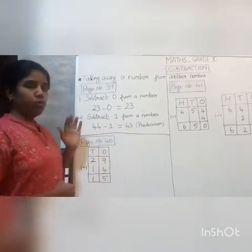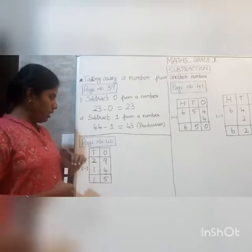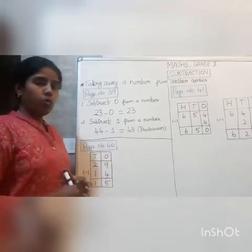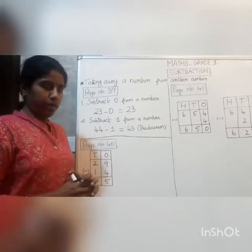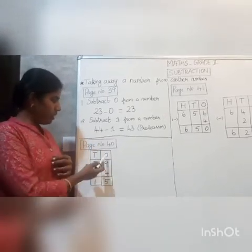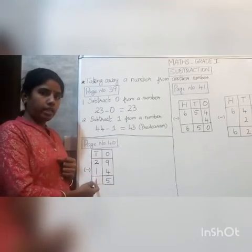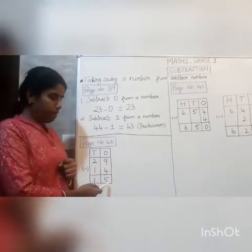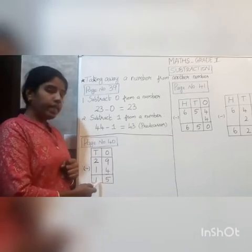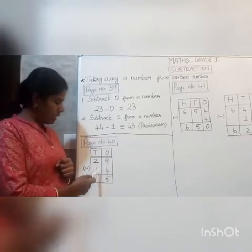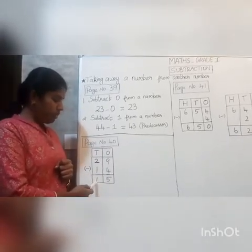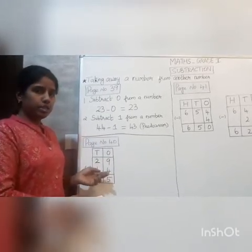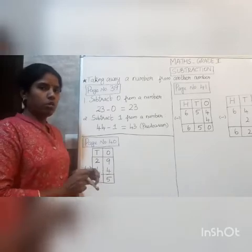Moving on to page number 40, we have two-digit subtraction without borrowing or regrouping. For two-digit subtraction we have the ones place first and then the tens place. We need to subtract and write the number in the ones place and then move on to the tens place, subtract and write the answer.